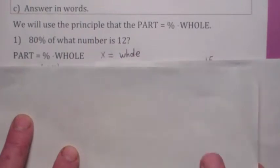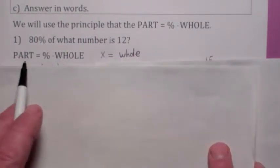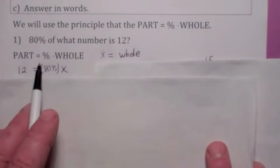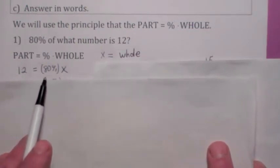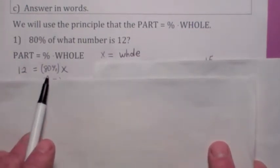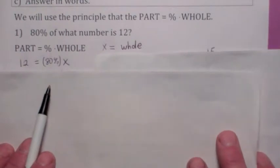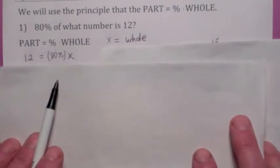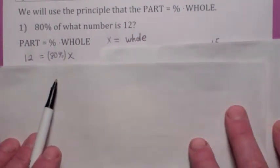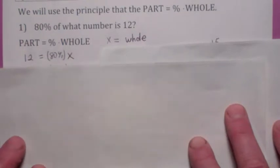So what would the equation look like? If x is the whole and 12 is the part, and the percentage is 80, this is your equation right here: 12 equals 80% times x. Now, this is the hardest part, is getting to here. Once you get to here, the rest is just solving it using techniques in chapter 3.